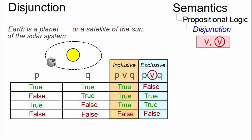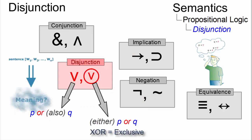It is symbolized by an encircled V. In natural language XOR resembles either P or Q, whereas inclusive OR can be represented best as P or also Q.